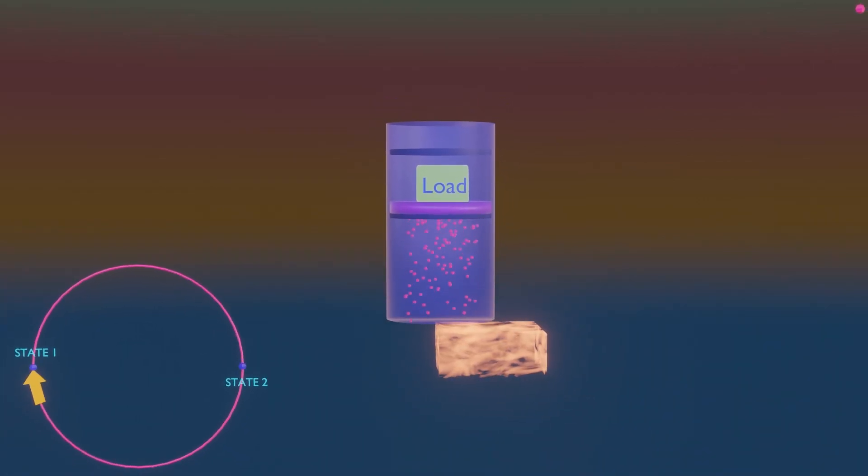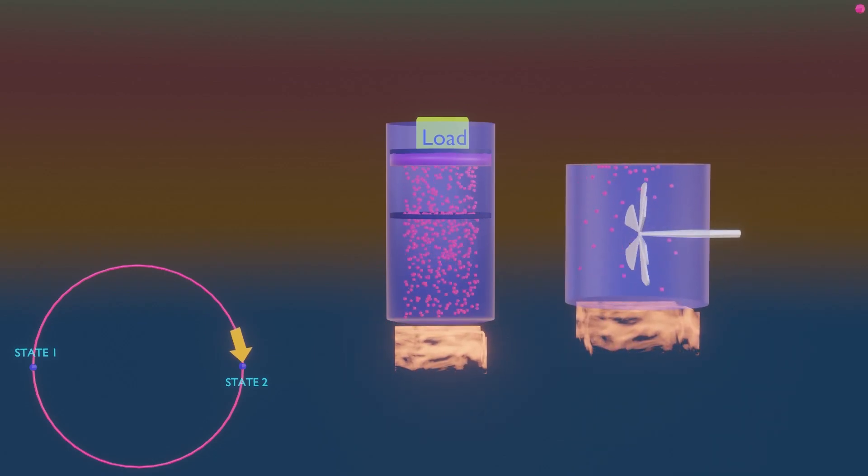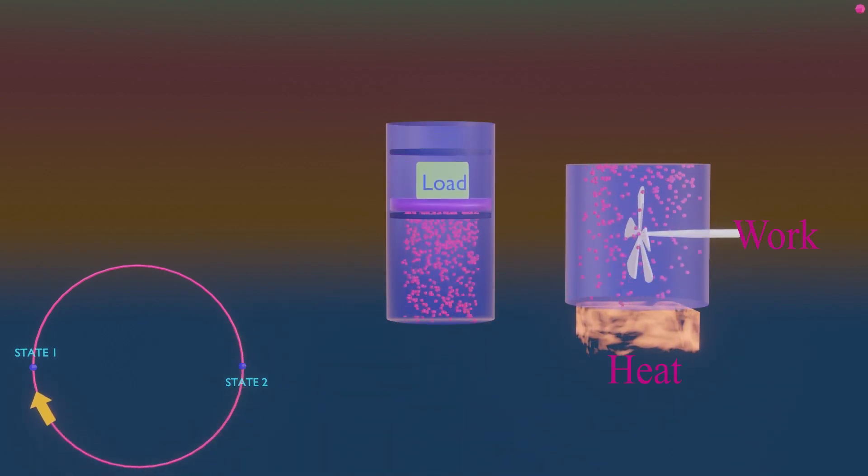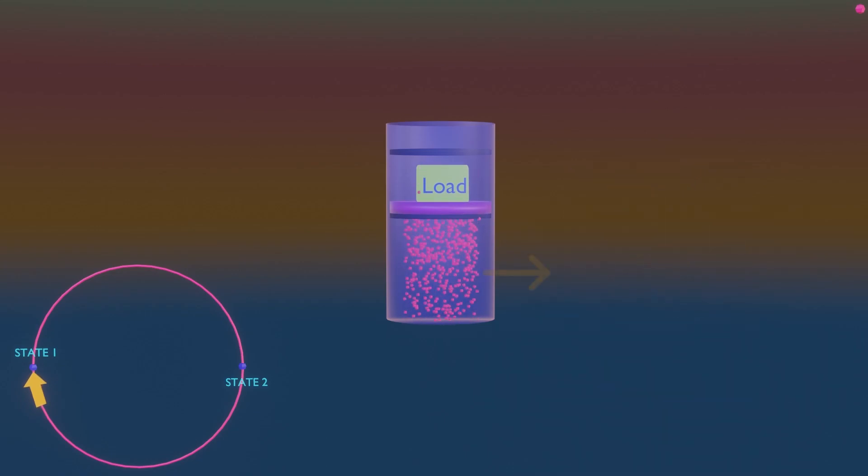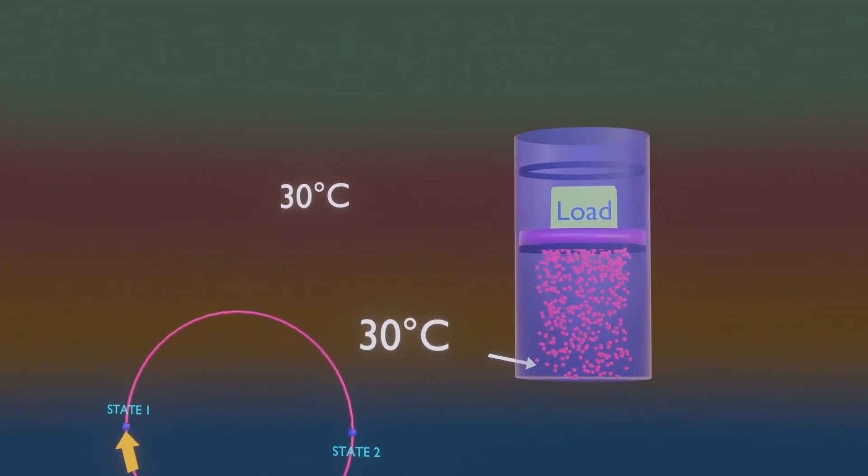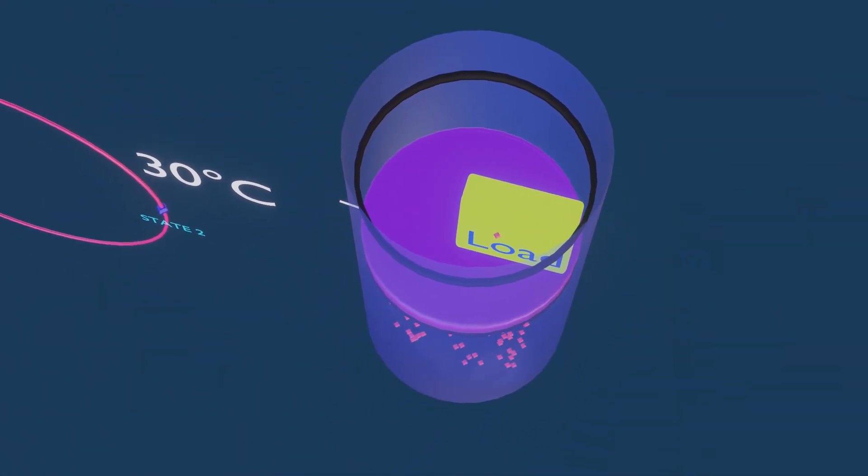Let us consider a simple heat engine that is used to lift a weight. A heat engine is a device that converts heat to work and it operates on cycle. Assume the working fluid inside this heat engine as an ideal one. Initially, the gas temperature is 30 degrees Celsius. The piston, which is loaded with the weights, is resting on top of the lower stops.